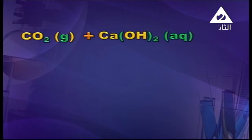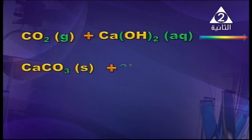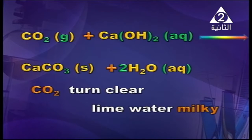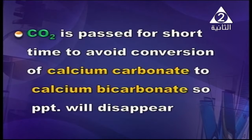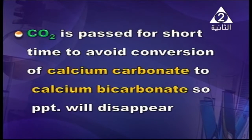This is due to the formation of calcium carbonate. This carbon dioxide, when added to calcium hydroxide — lime water — gives calcium carbonate and water. Carbon dioxide turns lime water milky due to formation of calcium carbonate. Also, when CO₂ is passed for a short time, it converts calcium carbonate into calcium bicarbonate, so the precipitate will disappear. This means you have carbonate salt.